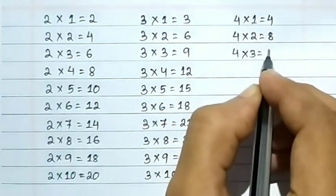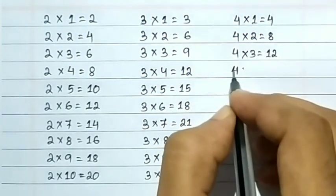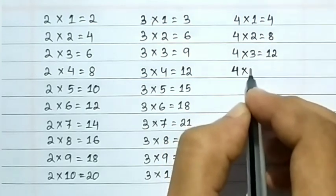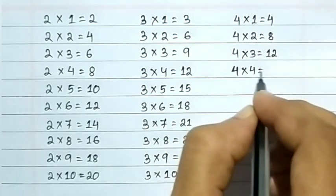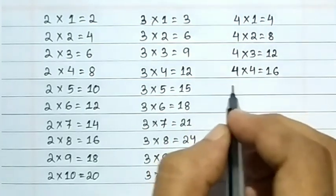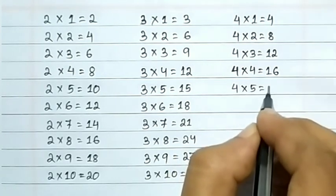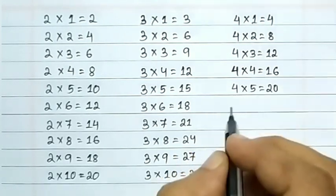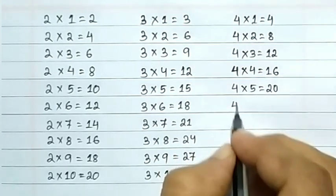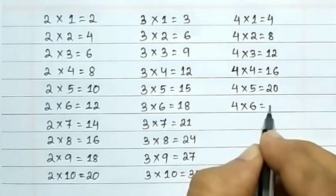4 3s are 12, 4 4s are 16, 4 5s are 20, 4 6s are 24.